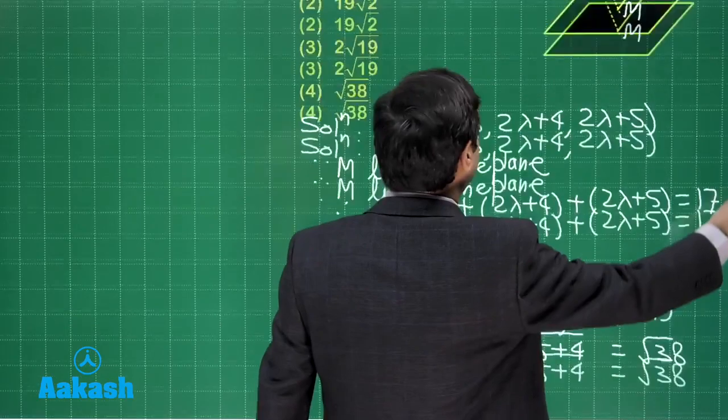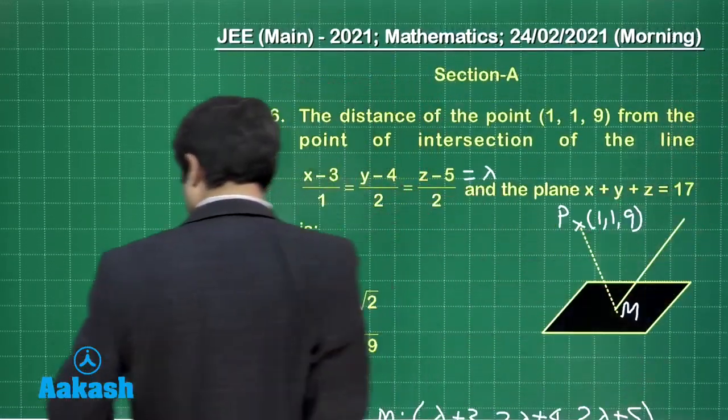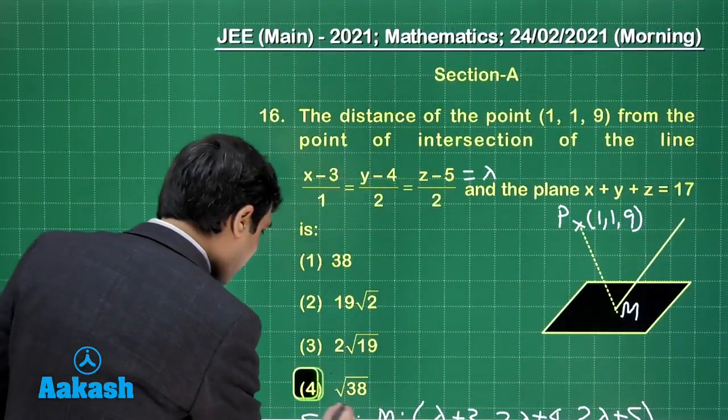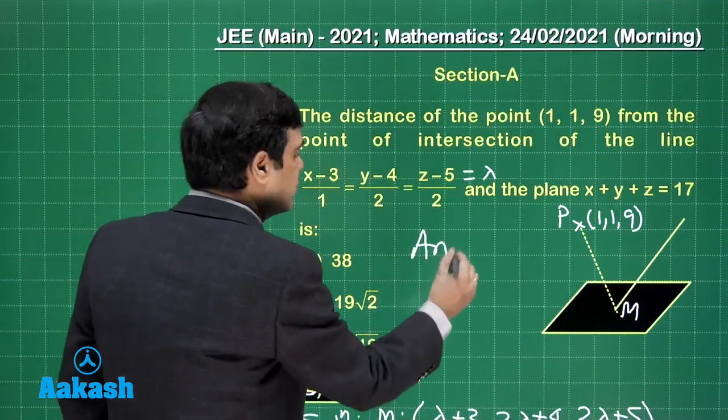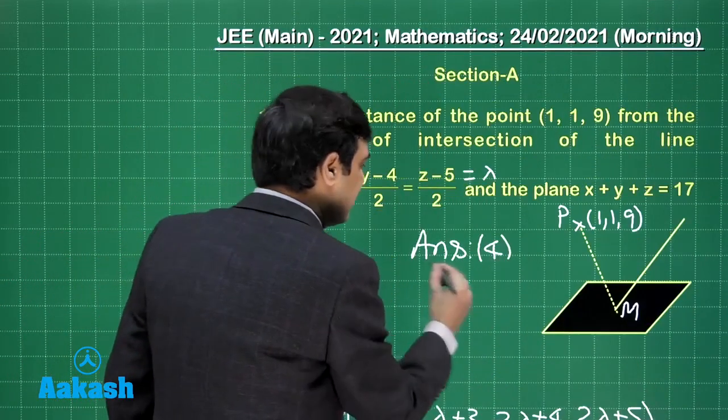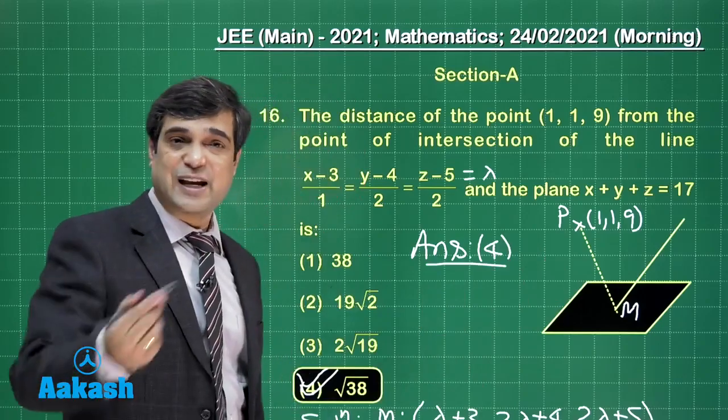Now time to check from the given options. Root 38 is given here as option number 4. So let us mark it as the required answer. So I am sure this question from 3D is also clear. Let us take up another question.